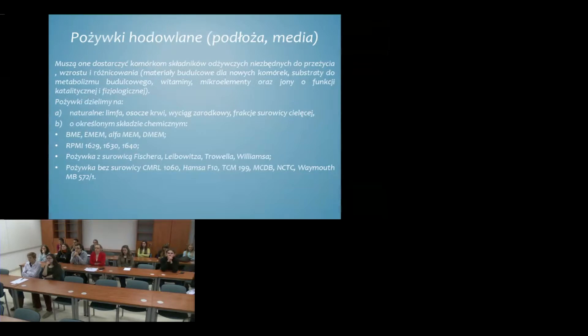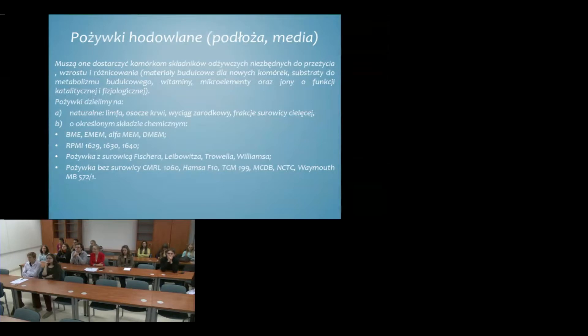Trzecim aspektem, być może najważniejszym, są pożywki hodowlane, czyli podłoża, media. Muszą one dostarczyć komórkom podstawowych składników odżywczych niezbędnych do przeżycia, wzrostu i różnicowania — są to substraty metabolizmu, witaminy, mikroelementy, jony. Dzielimy pożywki na dwa podstawowe typy: naturalne (np. limfa, osocze krwi, wyciąg zarodkowy, frakcje surowicy cielęcej) oraz o określonym składzie chemicznym. Najpopularniejszymi mediami są MEM, DMEM czy RPMI, dostępne komercyjnie i zawierające optymalny skład dla wielu typów hodowli.